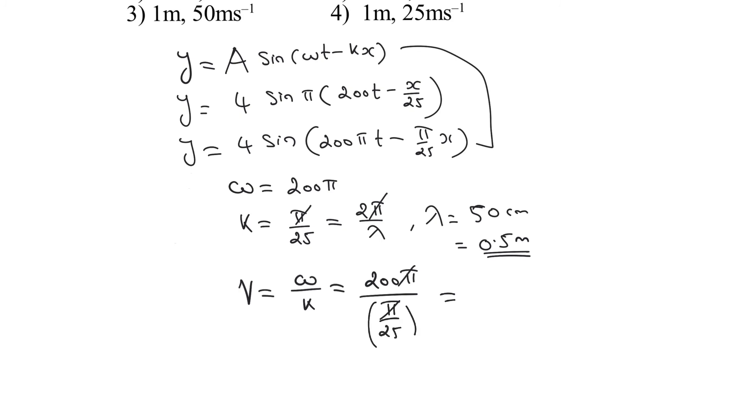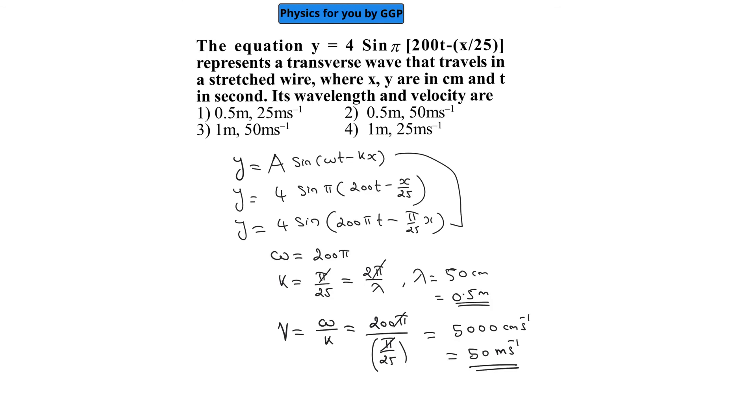We get v = 5000 cm/s, which equals 50 m/s. Therefore, the wavelength is 0.5 m and the velocity is 50 m/s.